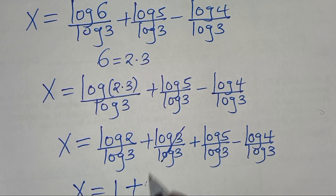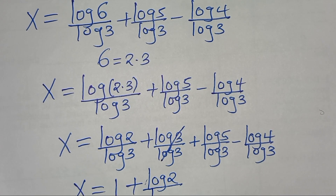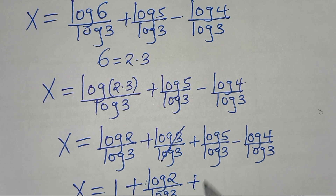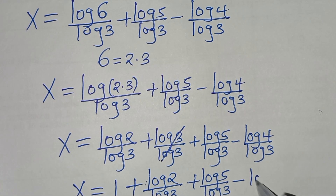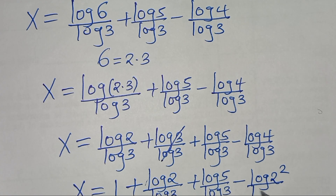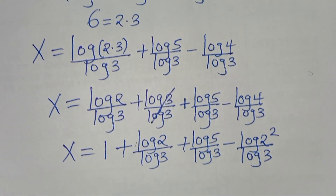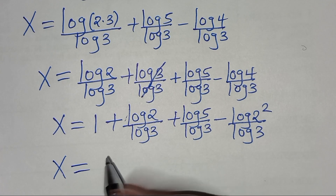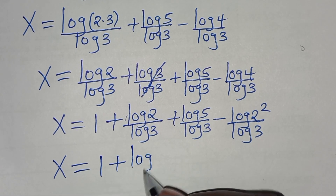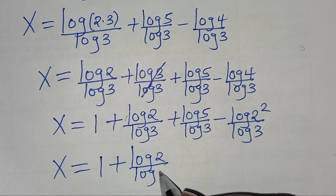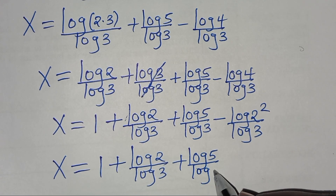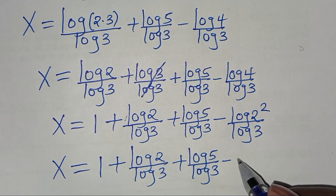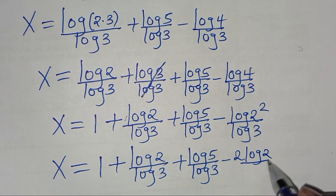So we have x is the same thing as 1 plus log 2 over log 3, then plus log 5 over log 3, then subtract — we can express log 4 as log(2 to the power 2), which is the same as 2 log 2 divided by log 3.